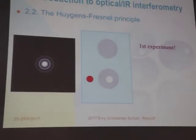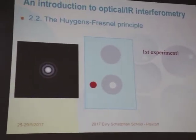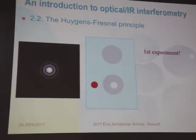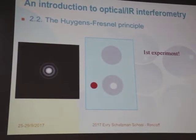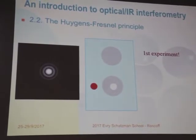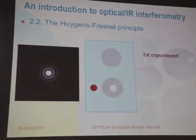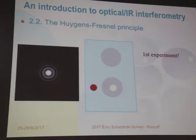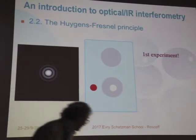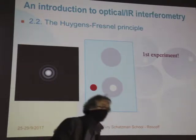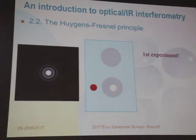If the hole is not very well done, just make a second one on the side and try again. If it doesn't work, make a third hole. Keep one spare piece of aluminum for the second experiment that I'll describe in a moment.